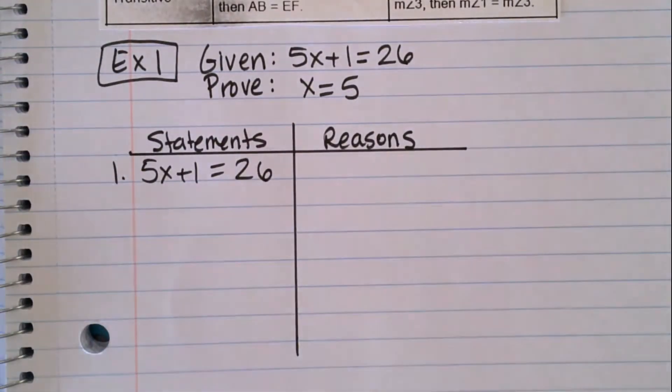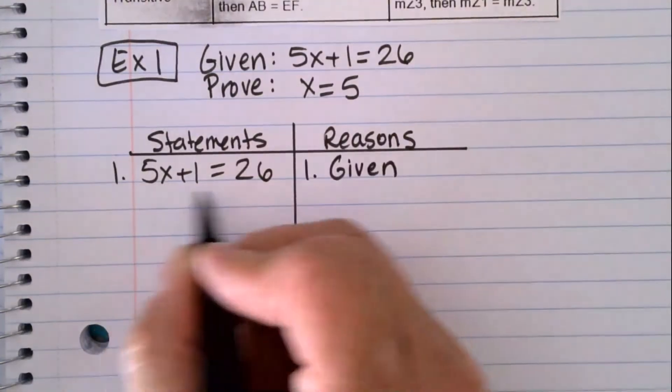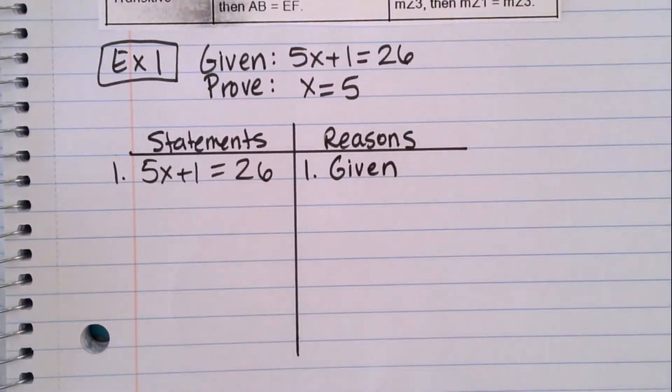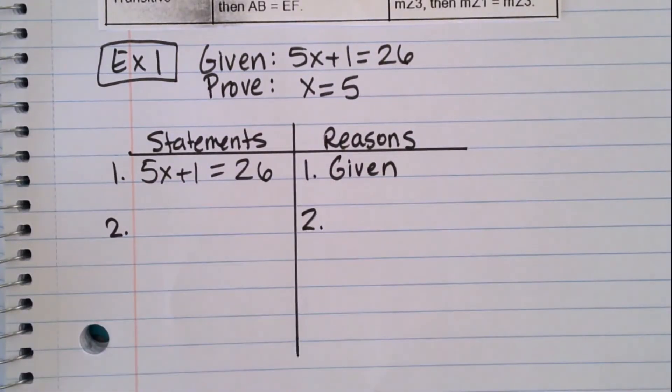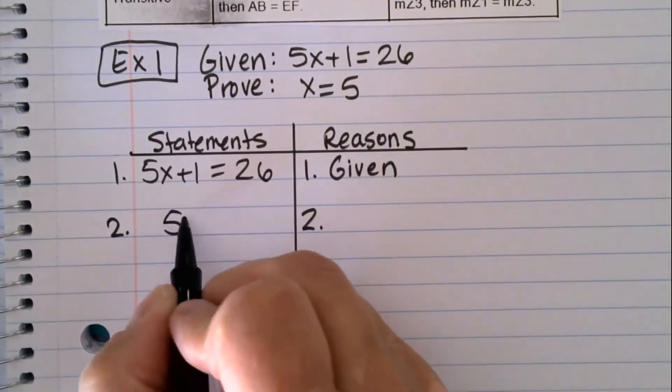We're going to write statements here and reasons here. We're going to make statements and then you have to make reasons for why you can make that statement. And we number them. The very first one is always whatever is given. 5x + 1 = 26. On these algebraic proofs, that's how we always start. You write the problem and then you write the word given.